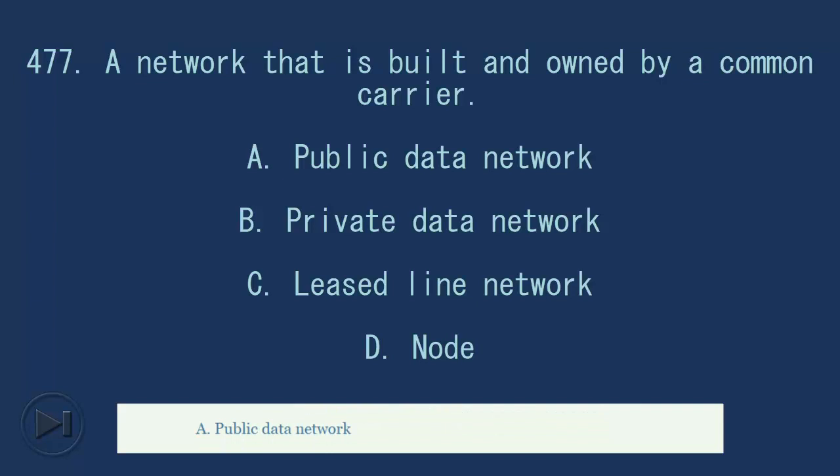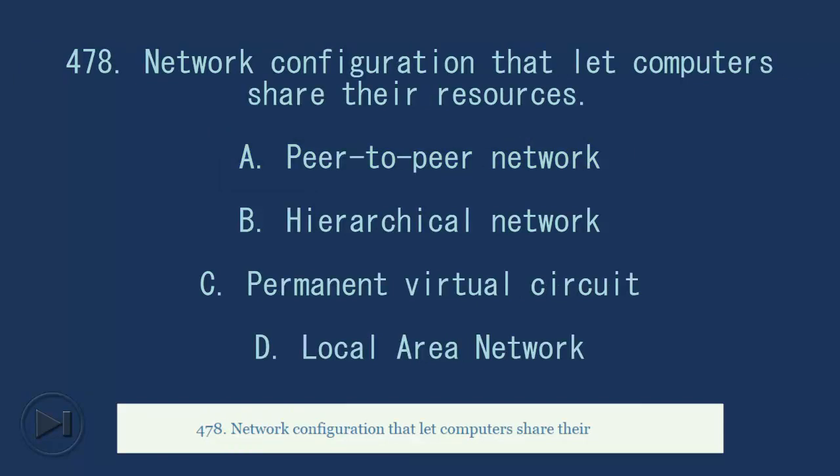477. A network that is built and operated by common carriers for profit. A. Public data network. B. Private data network. C. Least line network. D. Node. Answer, A. Public data network.